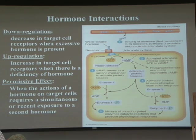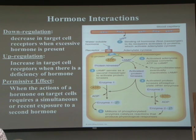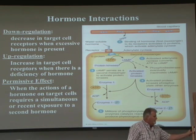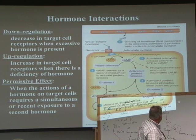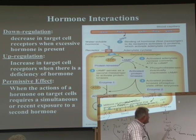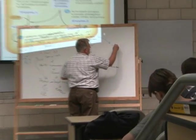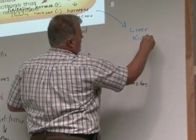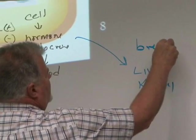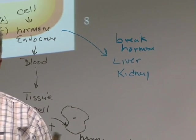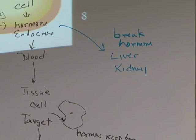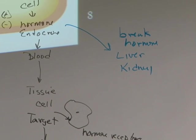An important aspect of the endocrine system is understanding how hormones interact with each other and with target tissue. We have a dynamic system — the liver and kidneys break down hormones. Even though we're producing hormones all the time, these two organs tend to break them down, so we must constantly release new hormones if we want the system to work.